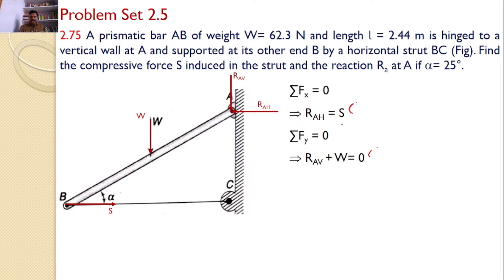Now we need to consider the moments about A. RAH and RAV pass through the point and will not introduce any moment. W will introduce a moment in the counterclockwise direction. S also will introduce a moment in the counterclockwise direction. Now we require the distances.